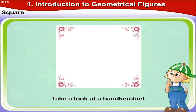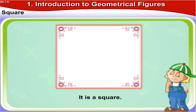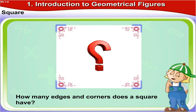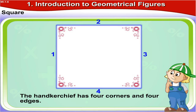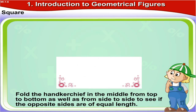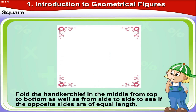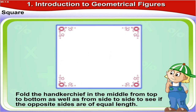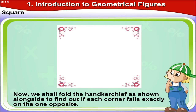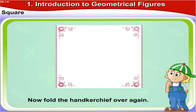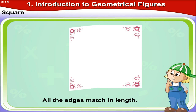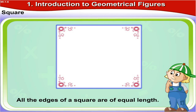Take a look at a handkerchief. It is a square. How many edges and corners does a square have? The handkerchief has four corners and four edges. Now fold the handkerchief in the middle from top to bottom as well as from side to side to see if the opposite sides are of equal length. We shall fold the handkerchief to find out if each corner falls exactly on the one opposite. The corners match and so do the edges that make them up.